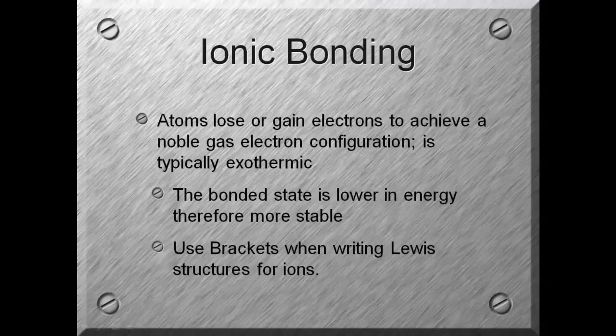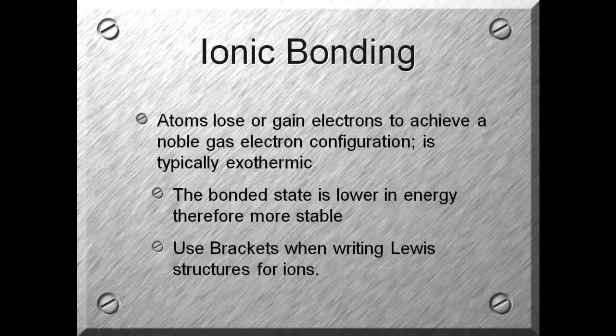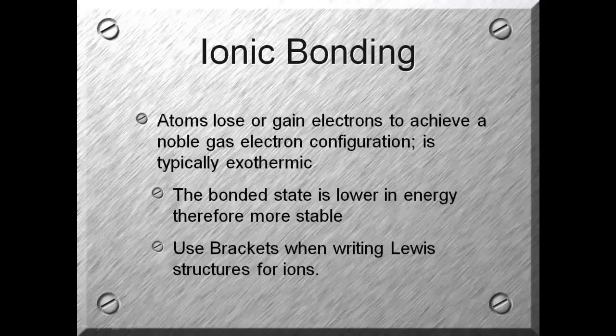With ionic bonding, atoms will lose or gain electrons to achieve a noble gas configuration. And this is typically an exothermic reaction. The bonded state is lower in energy, therefore it's more stable. And when we use, when we start drawing the Lewis structures for ions, we're going to make sure we use brackets.